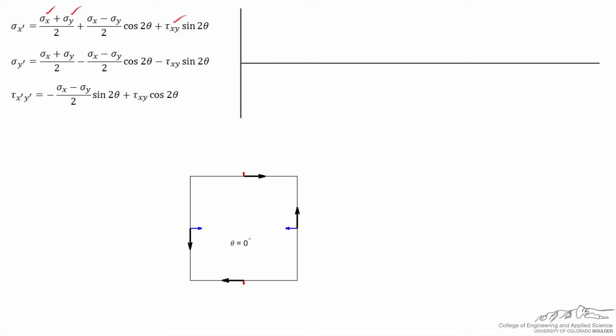You get these values from the original loading from the problem statement. Let's do an example where sigma x is equal to negative 8 — which could be megapascal, psi, or other equivalent units of stress — using negative 8 to represent compression in the horizontal axis. Sigma y for this problem is equal to 3, a positive value meaning tension in that direction, and the shear stress tau xy is 15.